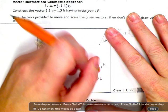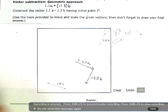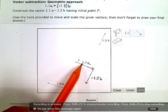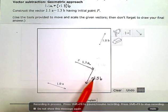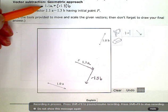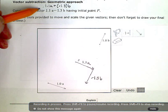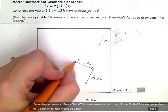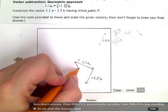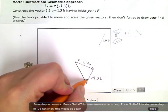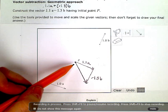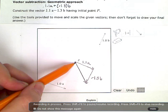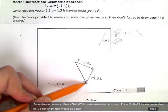So you have 1.1a plus negative 1.3b. And then the resultant vector that represents the combination of those two starts at the first tail and goes to the last tip. So the last thing you're going to do is draw in the vector that goes from our initial point to our very last tip right there.